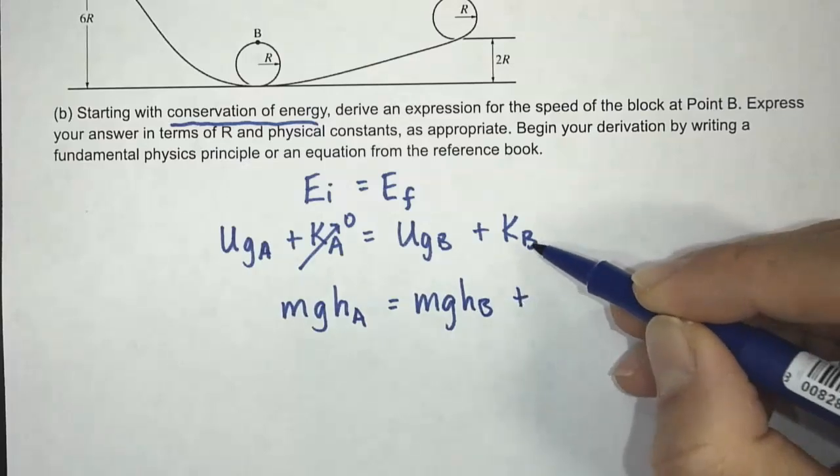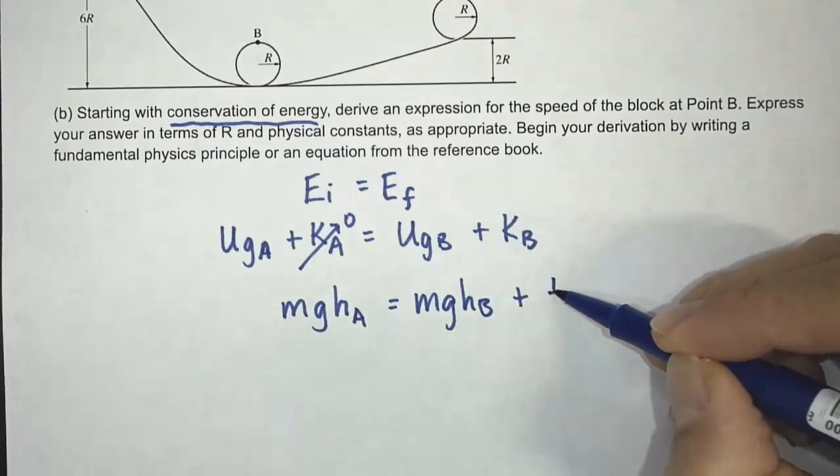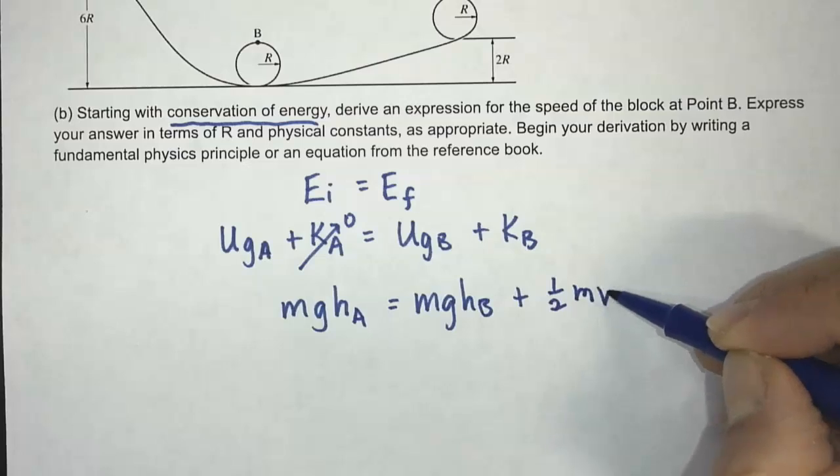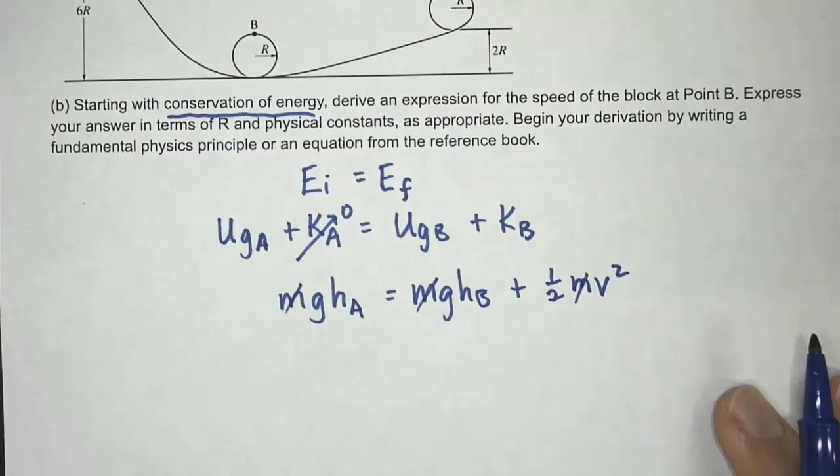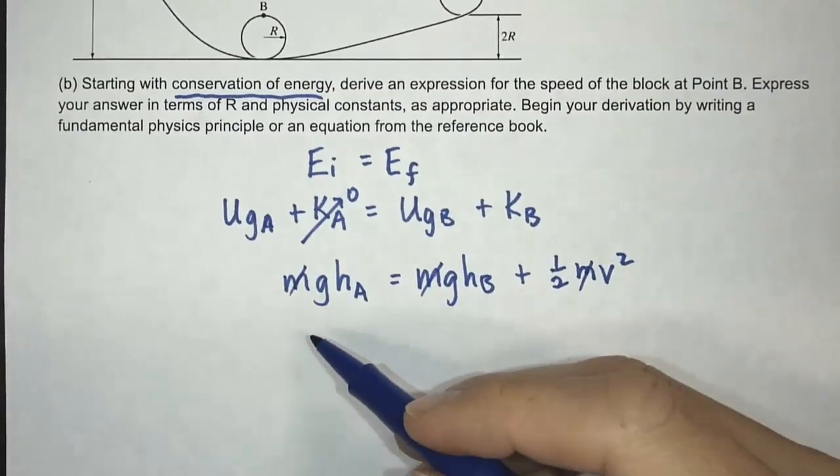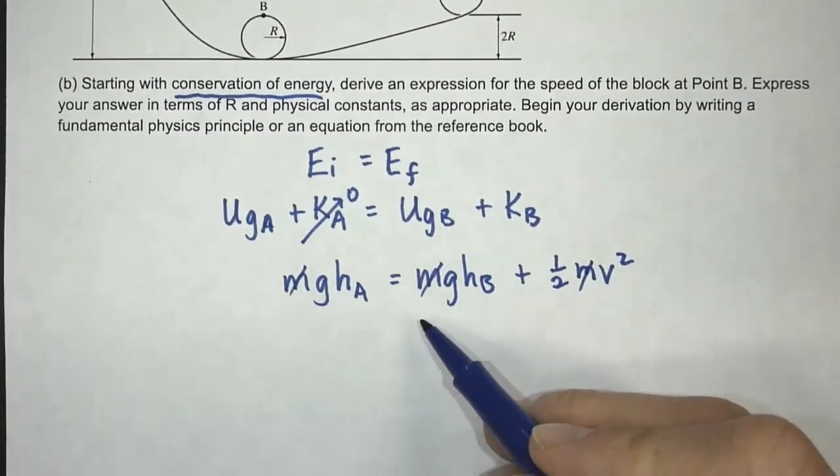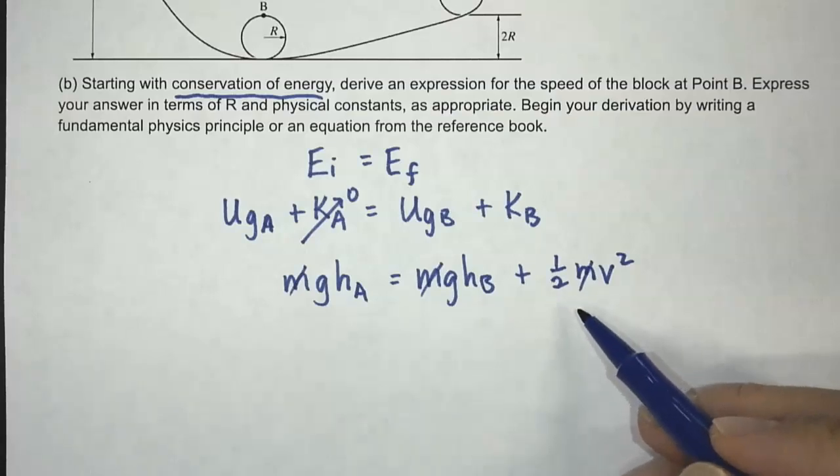And then the kinetic energy at B, that's going to be 1/2 MV squared. Now you'll notice that the M's cancel out. So this is kind of nice, they cancel out. And then that leaves us with gHA equals gHB plus 1/2 V squared.